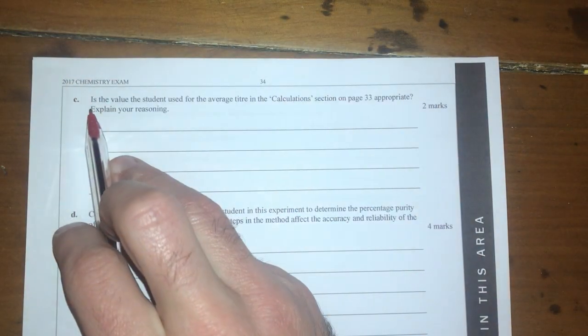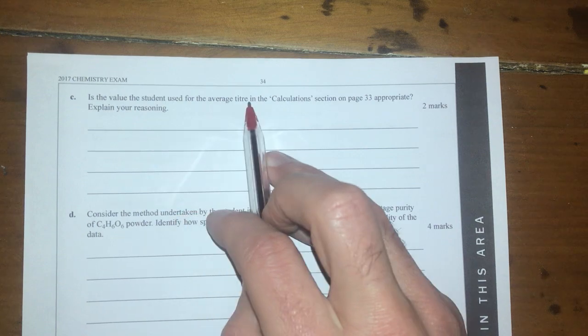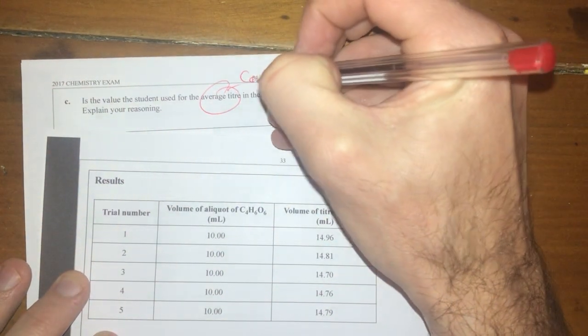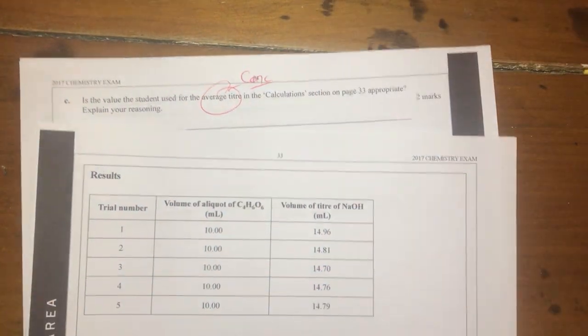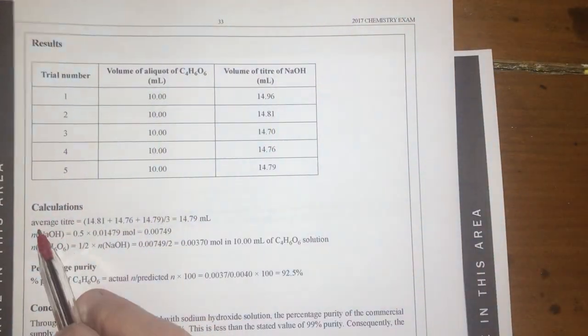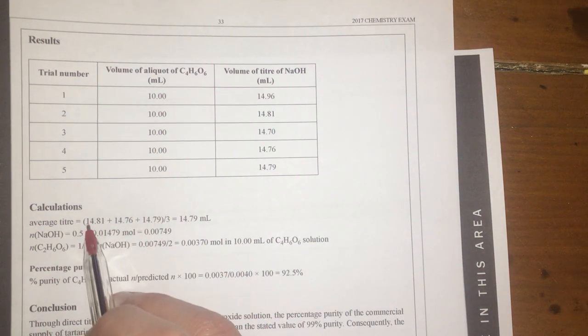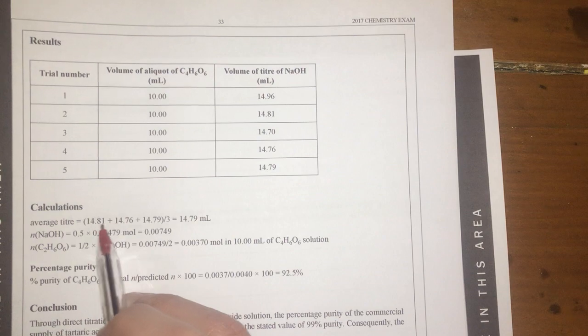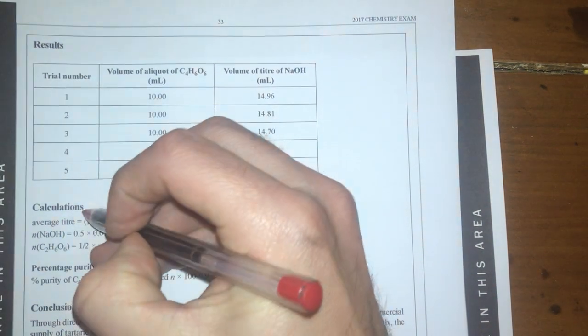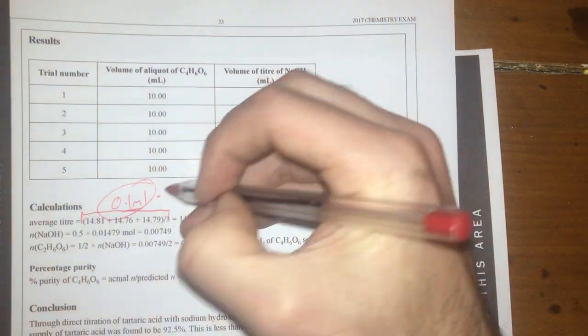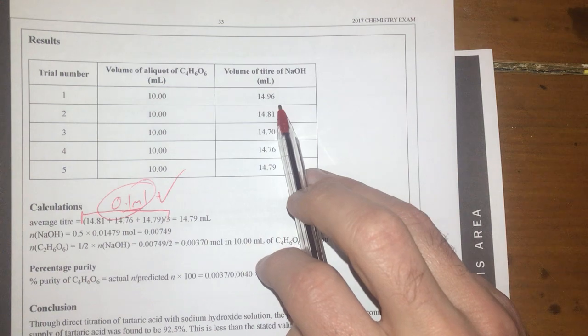Moving on. Is the value of the student used for the average titer in the calculations section appropriate? Explain your reasoning. So if you're calculating average, we need to have concordant titers. So let's check to see what they've done here. Average titer. We've used, well, we've got five trials, but we've only used three, so that's a good start. 0.81, 0.76, 0.75. That means they're all within 0.1 mL of each other. So that's pretty good to me. They've taken out this outlier, so that's all good.